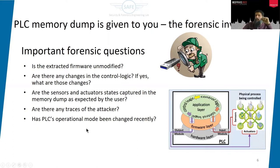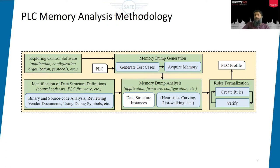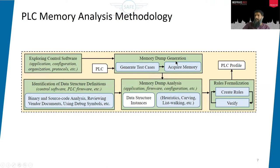To find the answers, one approach is to reverse engineer the firmware and control software, but that is too tedious, requires a lot of manual effort, and is not scalable. So we propose an application layer interaction based approach. The first step is control software analysis — we explore the control software, which lets you program the PLC, push the program to the PLC, and get monitoring feedback. After exploring, we create a sequence of test cases, push them one by one, acquire the memory, and analyze the dump in a loop.